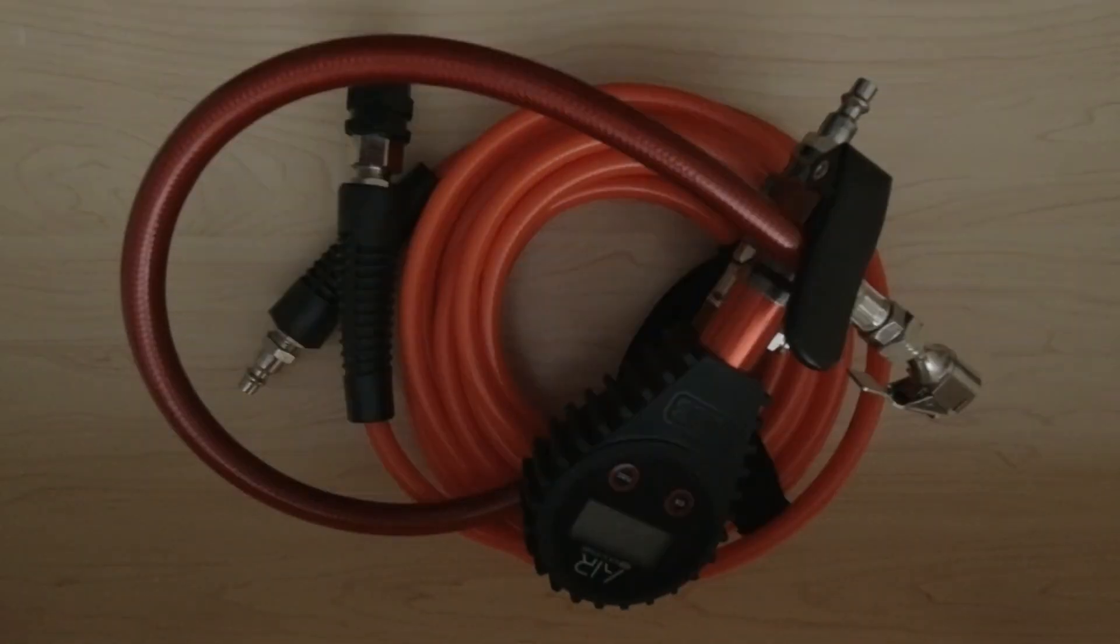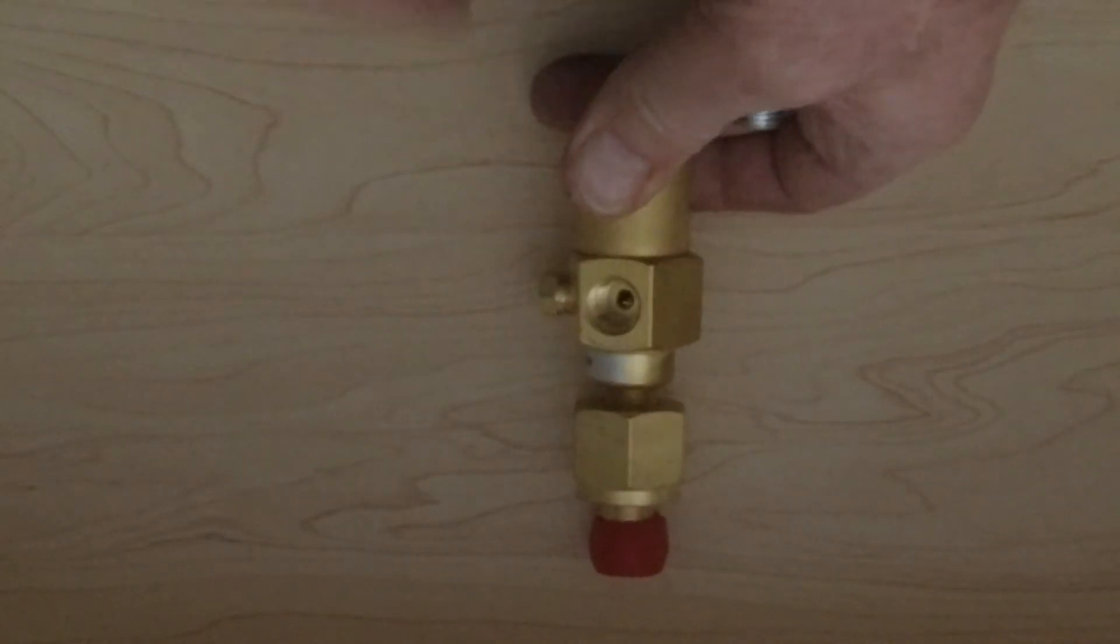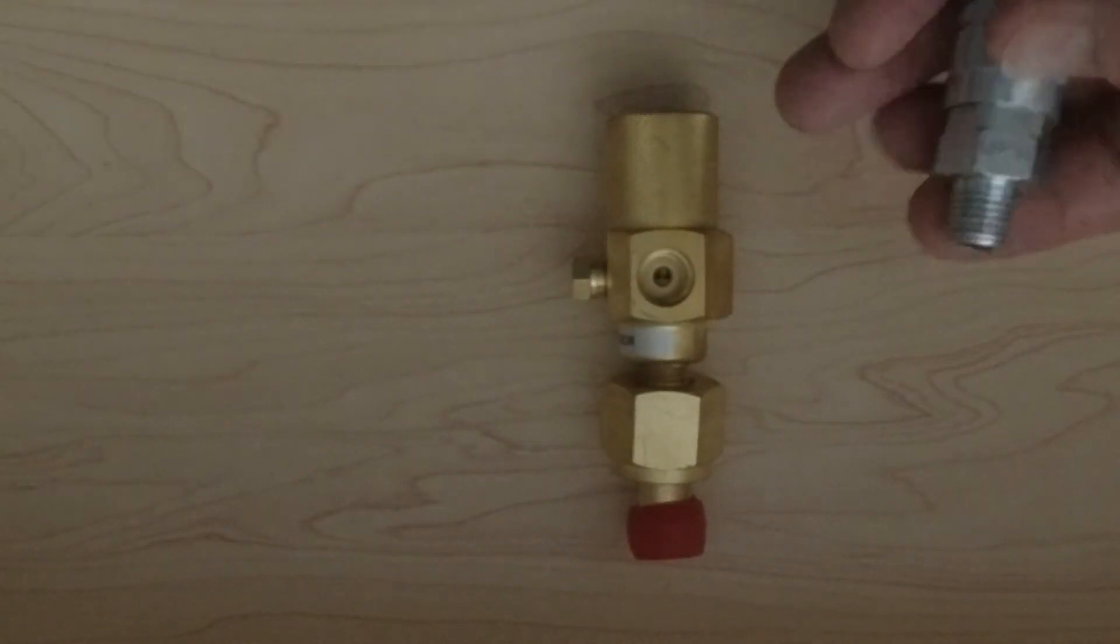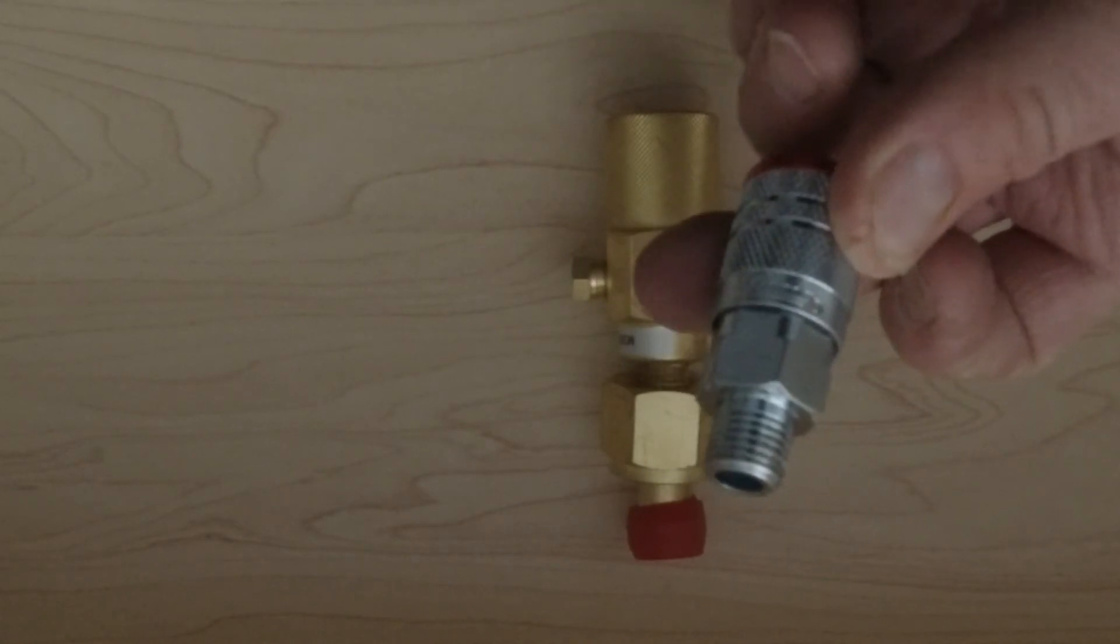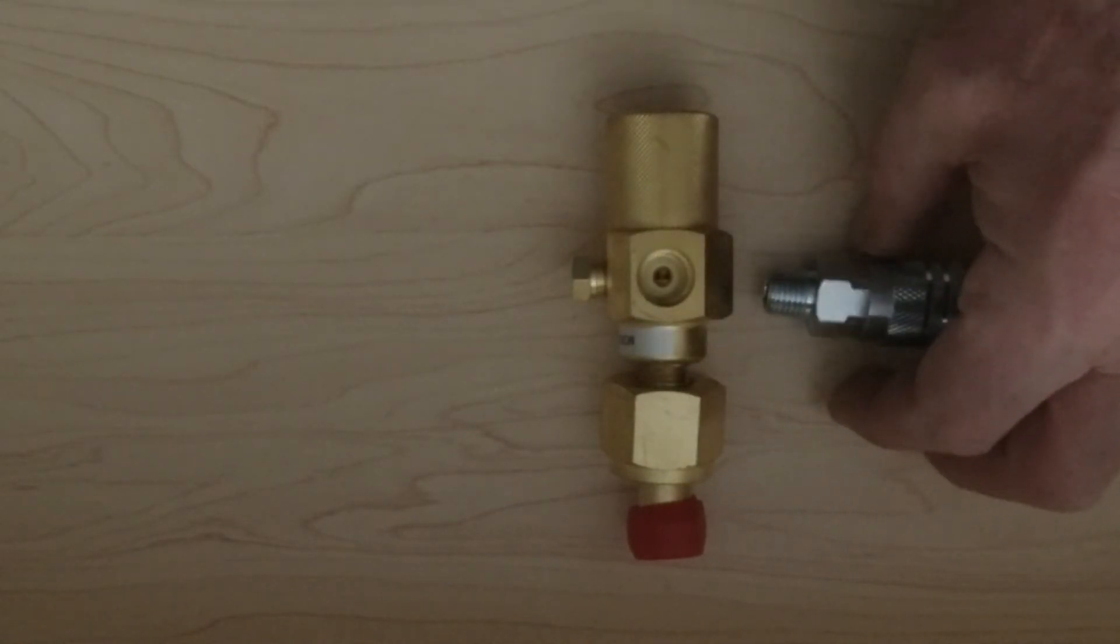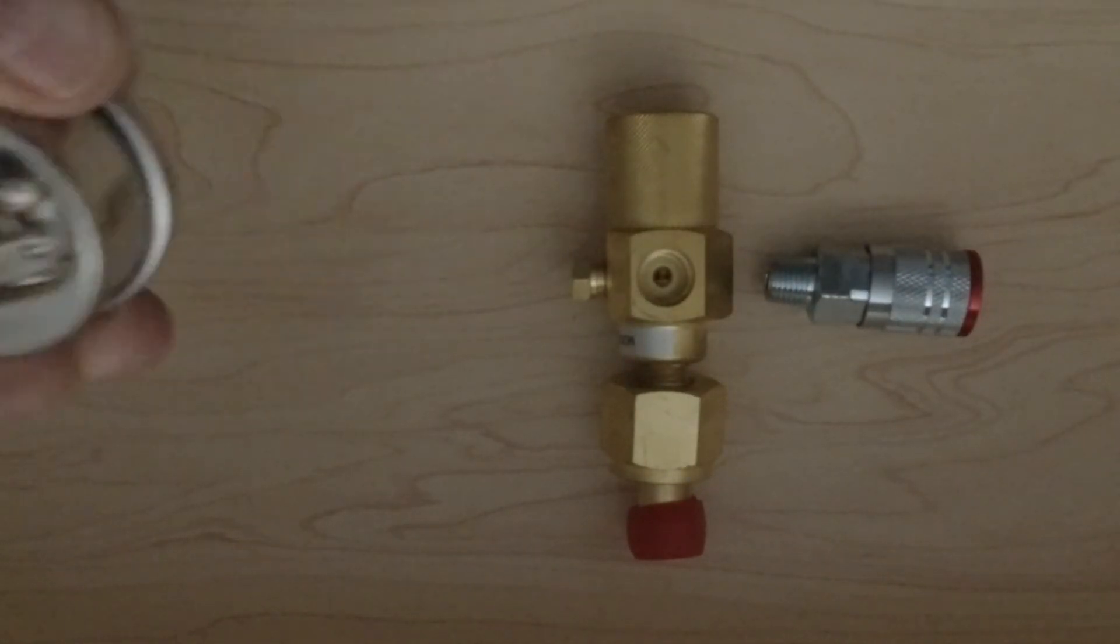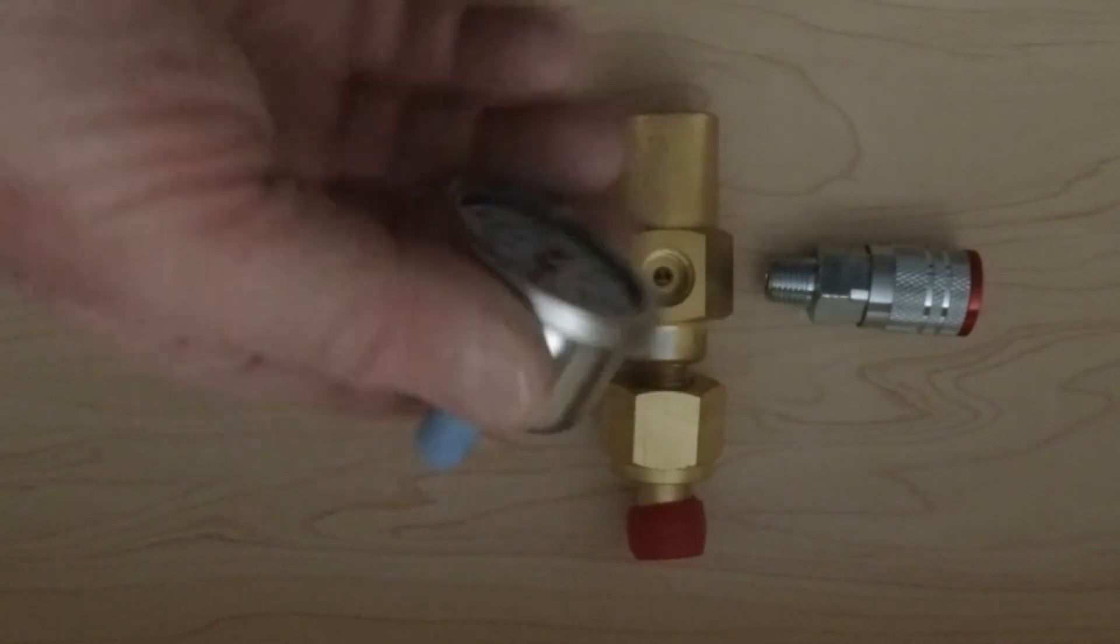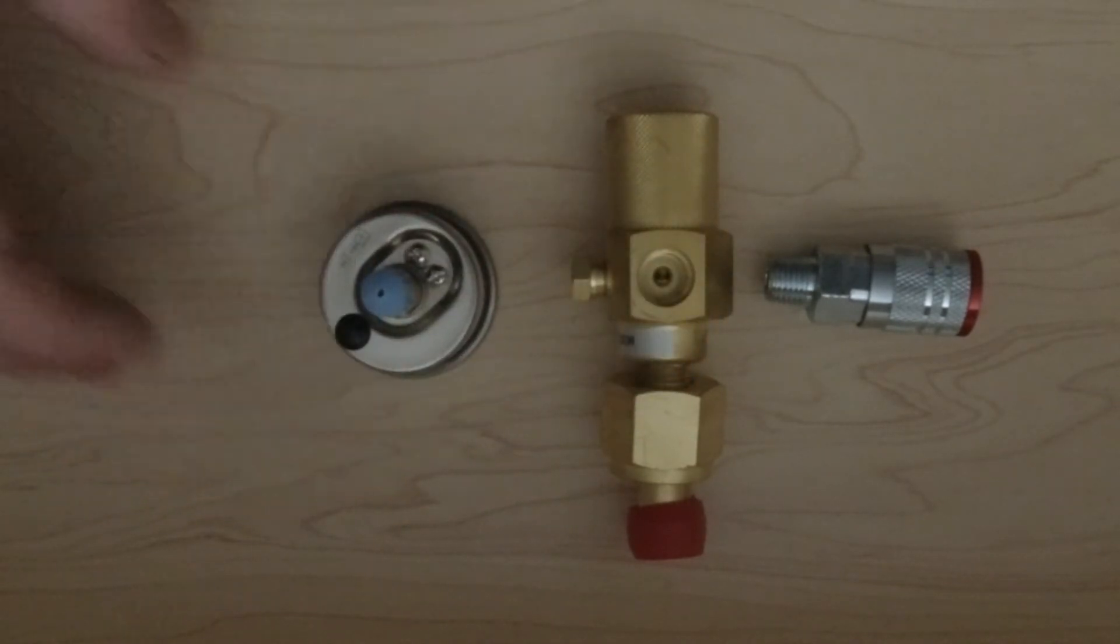I also have a bonus item which we can use with the system which I will show you at the end of the video. To assemble the regulator connections we take the regulator and we're going to insert the quick coupler on this side and the pressure gauge on this side. You can't go wrong they can only fit in one location on the regulator.